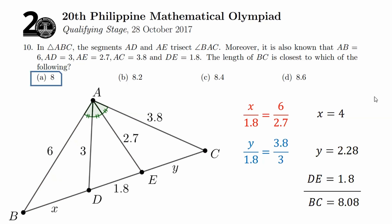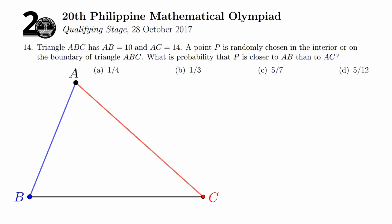Onto the second and last problem of this video. Also taken from the PMO, the 20th PMO, problem number 14. Triangle ABC has AB equals 10 and AC equal to 14, the blue and red segments. A point P is randomly chosen in the interior or on the boundary of triangle ABC. What is the probability that P is closer to AB than to AC? The choices are 1/4, 1/3, 5/7, and 5/12.